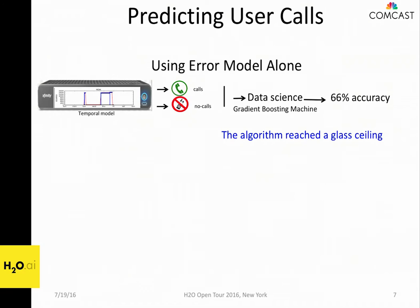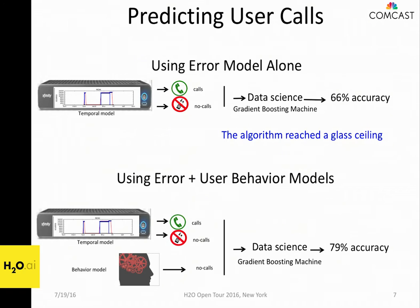When I looked at what was missing in the modeling, it was obvious: you need to model the user. Once you model the behavior of the user, you find out that some users call very quickly while others never call — maybe they're not even watching TV and don't see what's going on. Just by looking at the user and modeling them over time, we could reach 79% accuracy, which is reasonable. We can now send recommendations to call centers saying this person might call very soon, and also send notifications to users saying we noticed something is wrong in their installation and we're working to fix it.